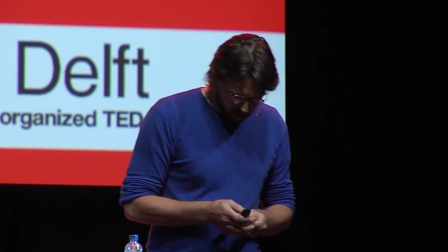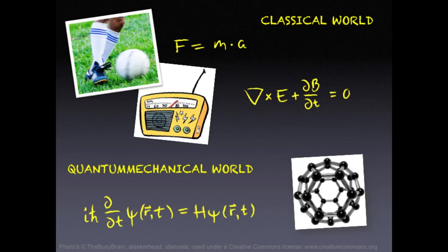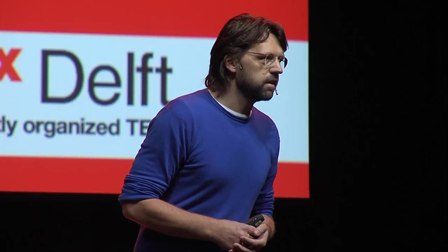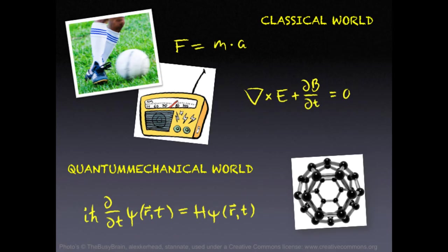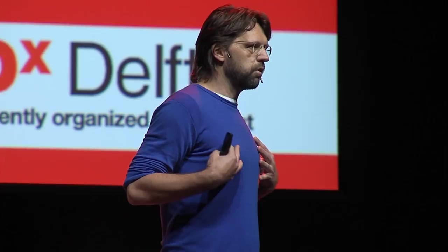But there's more. Besides our classical world, there's also a quantum mechanical world — the world of atoms, molecules, very small particles. And again, we have a very simple-looking equation with a Greek symbol in it, which makes it a little obscure, but otherwise fairly short. Please be impressed that this equation, the Schrödinger equation, describes all of chemistry.